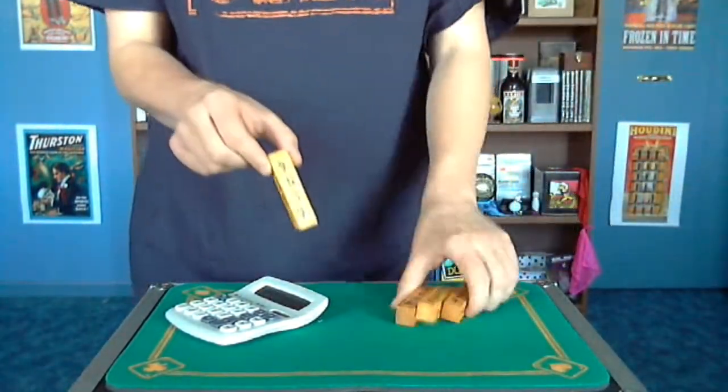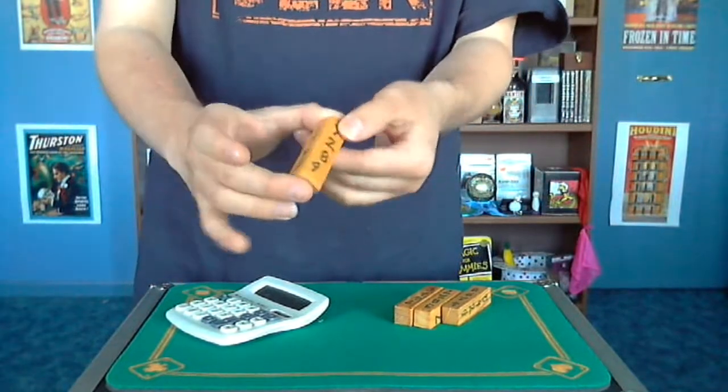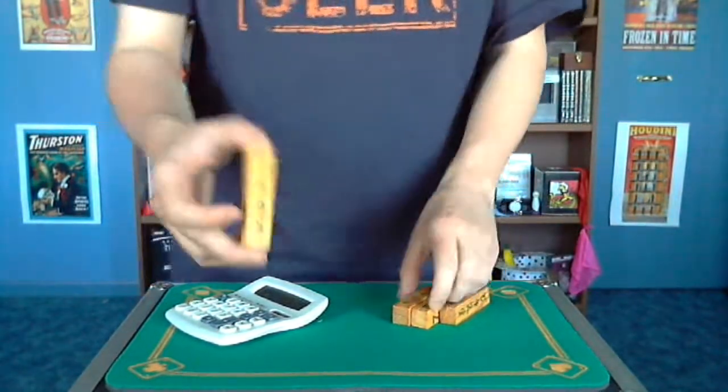Renaissance dice are these guys. They're little sticks that have numbers on each side. Now all the numbers are different on every single cube.